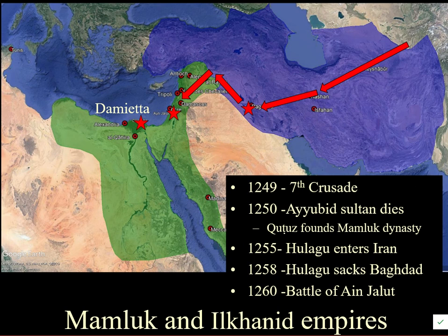This was the first major success of the Mamluk Sultanate at the Battle of Ain Jalut. The Mongols were not at their full force — many had gone back to Mongolia — but it was a defeat, and it meant that western Syria was taken back under rule from Egypt, making this area one political entity including the holy places.